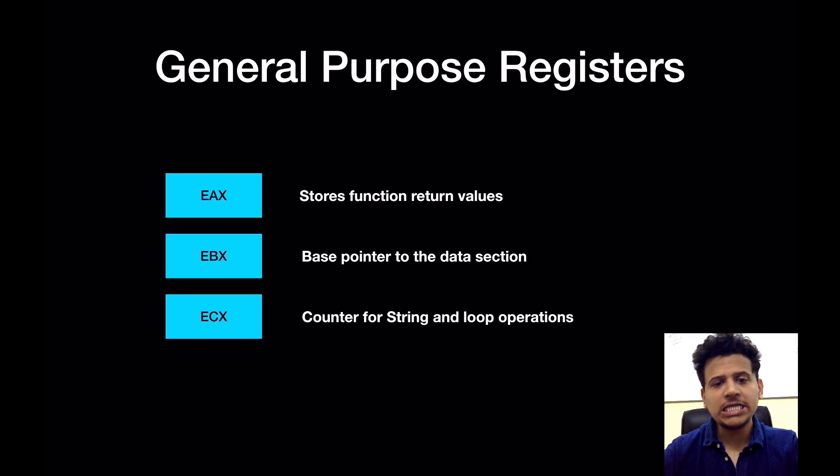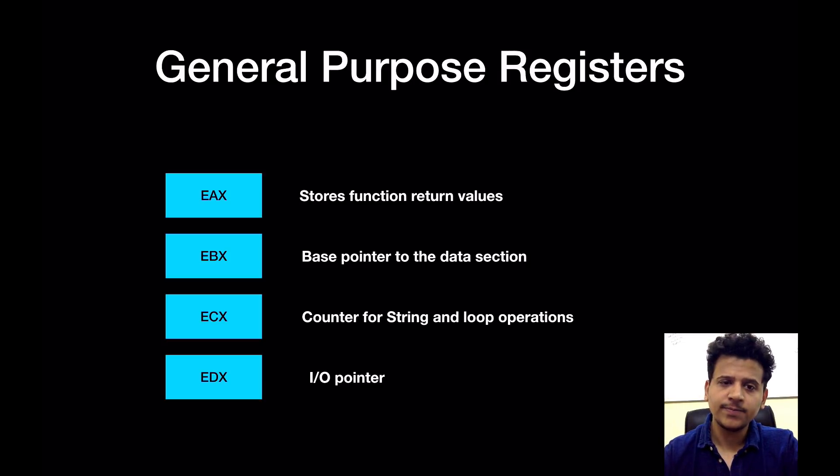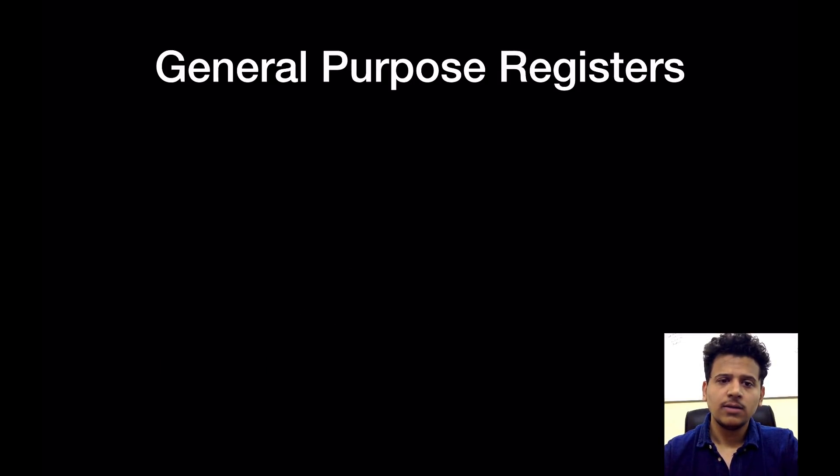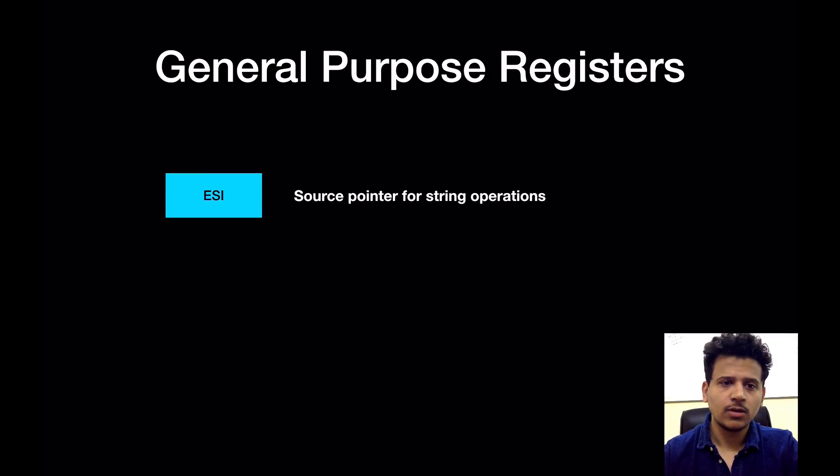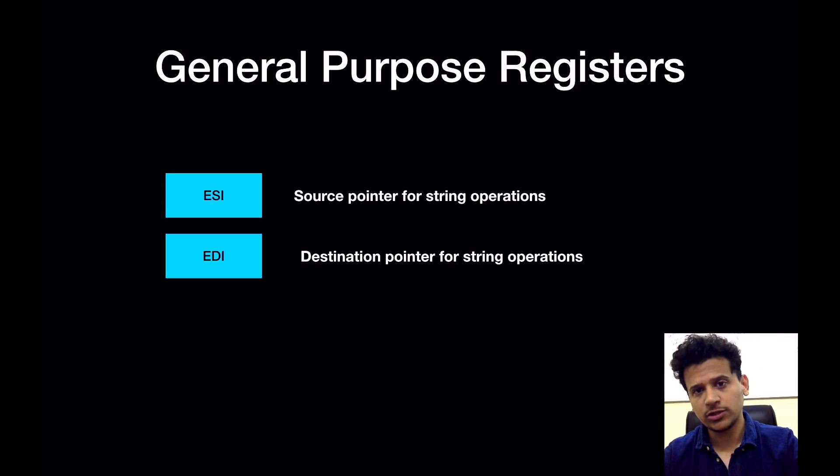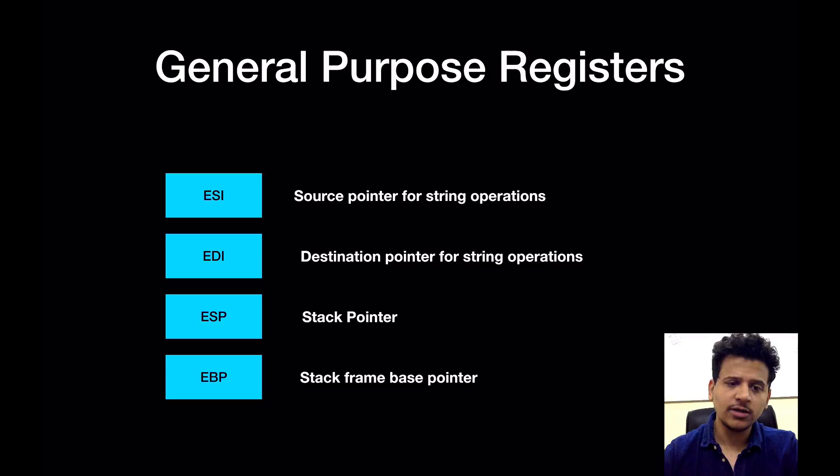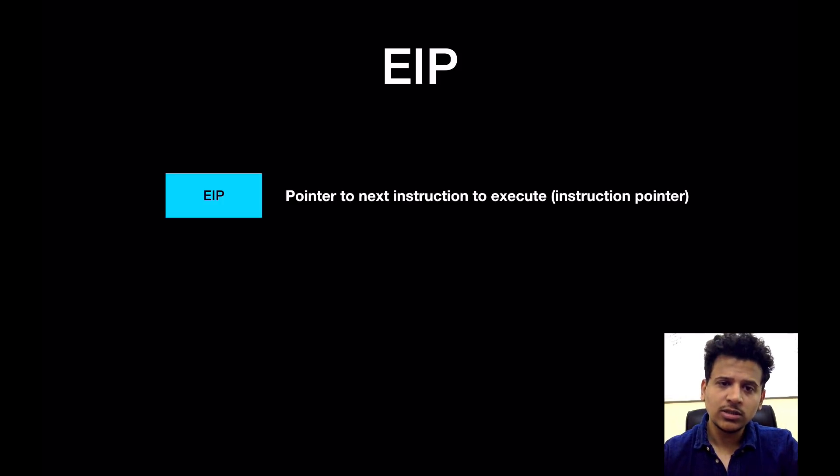First we'll start with the general purpose registers. So EAX register is used to store the function return value. EBX stores base pointer to the data section. ECX is a counter for string and loop operation. EDX is I/O pointer. ESI is a source pointer for string operation. EDI is a destination pointer for string operation. ESP is a stack pointer, and EBP is a stack frame base pointer. I know it's sounding a little bit confusing, but soon we're going to see them in action, then you'll understand them clearly.